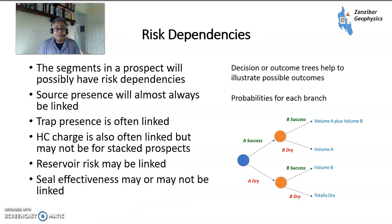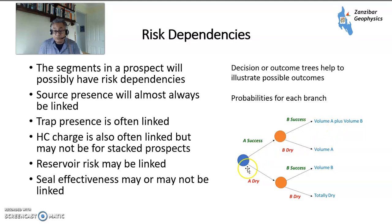A little bit on risk dependencies. The segments will have risk dependencies. For example, source presence is almost always linked if the two plays are part of the same petroleum system. Trap presence is also linked, particularly in stacked prospects — if you have an anticline, everything is there. Hydrocarbon charge may also be linked for stacked prospects but may also be separate. Reservoirs may be linked or separate. Seal effectiveness may or may not be linked. Looking at that in the form of a decision tree: drilling segment A could be a success or dry. If it's a success you drill segment B, which may also be a success or dry — giving four outcomes with probabilities for each branch.